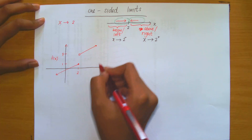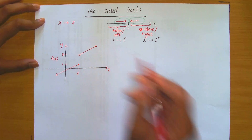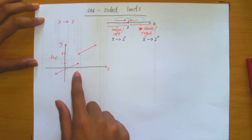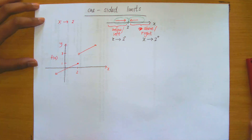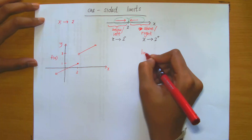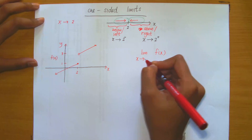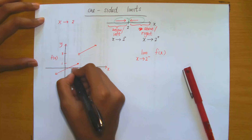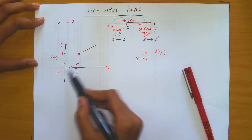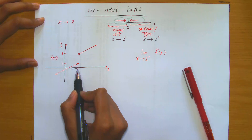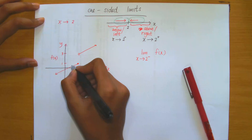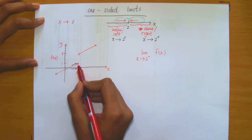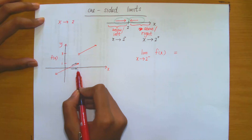Let's look at the graph of f(x) on the x-y plane, and evaluate what's happening around the x value 2. We are going to evaluate the one-sided limits. Let's first calculate the limit of f(x) as x approaches 2 from the left, meaning approaching from below. As I approach 2 from the left on the number line, observe that f(x) approaches the value of 1.